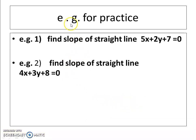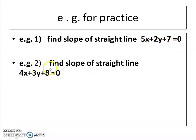Now, examples for practice — note these down. Example 1: find the slope of straight line 5x plus 2y plus 7 equal to 0. Second: find the slope of straight line 4x plus 3y plus 8 equal to 0. Use the formula m equal to minus a upon b.